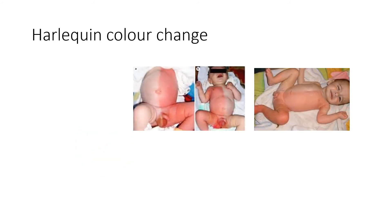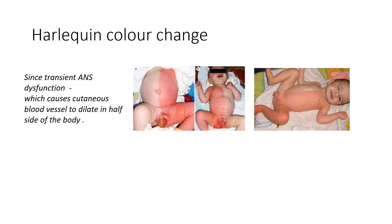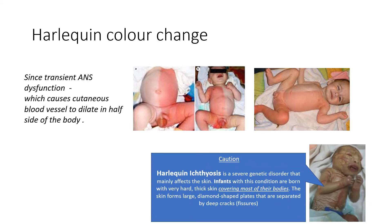Next comes harlequin color change. This occurs due to transient autonomic nervous system dysfunction, which causes blood vessels of the skin to dilate on one half side of the body. One has to be aware of another similar term called harlequin ichthyosis, which is a severe genetic disorder affecting the skin. Infants with this condition are born with very hard and thick skin covering most of their bodies, with fissures or cracks in between the skin, as seen in the image here.